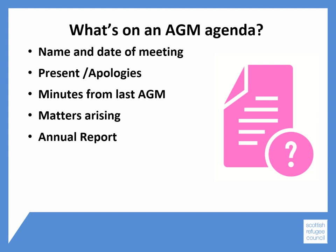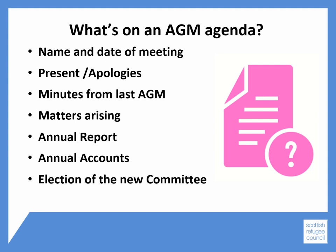You can give a presentation, show photos, or simply talk about your achievements over the year and answer any questions. Your treasurer will then give a report of the annual accounts, talking through key points and answering any questions. The next stage is the election of the committee — the current committee will step down and an independent person should chair the election. Election procedures should be detailed in your constitution, and all that's left is to set the date of your next committee meeting.